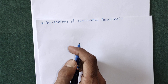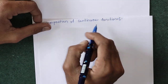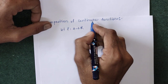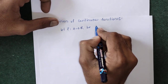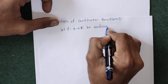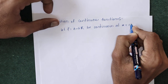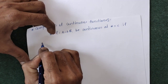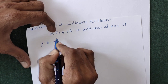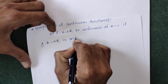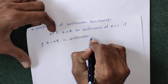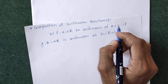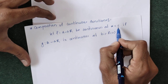The composition of two continuous functions is continuous. Let f from A to R be a continuous function at some point x equals c. If g from set B to R is also continuous at the point b equals f(c), that is at the image of c under f.